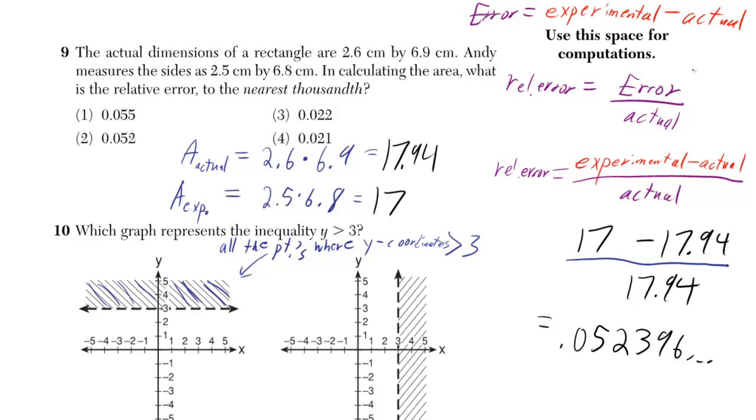What do we mean by error? We mean the experimental amount minus the actual amount. Here's a slight technicality - typically we take the absolute value of that so we always get a positive answer, which I forgot to do and just realized.